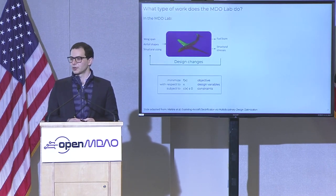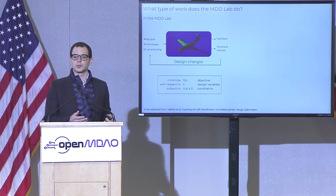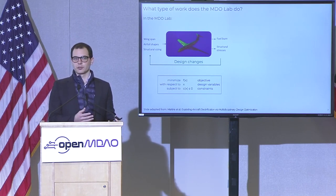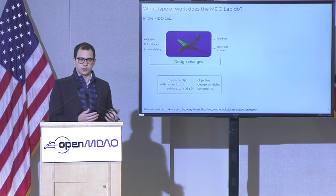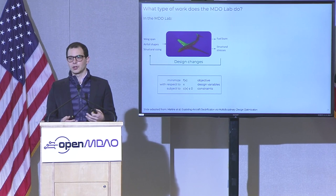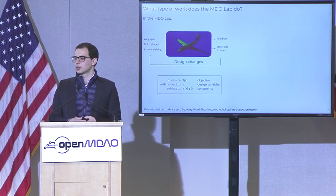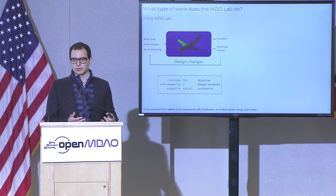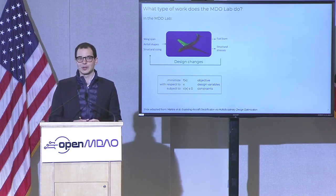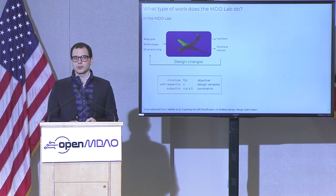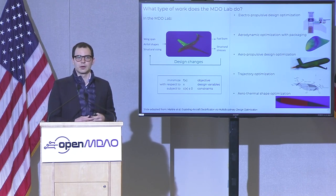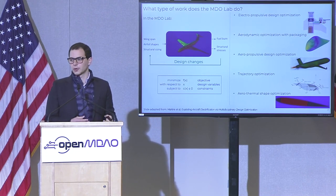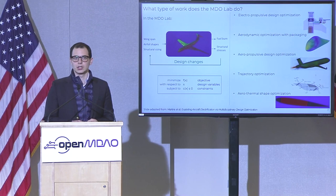To step back to the kind of work that we do in the MDO lab: a typical problem when the lab was founded is an aerostructural problem. We have a truss-based wing example vehicle with design variables such as wingspan, airfoil shapes, and structural sizing, from which you can compute fuel burn or structural stresses to come up with an optimized vehicle shape and structural design. Just to recap what we do in the lab specifically, we have projects on electric-propulsive design optimization, aerodynamic optimization with packaging constraints, aeropropulsive optimization, trajectory optimization, and aerothermal shape optimization.